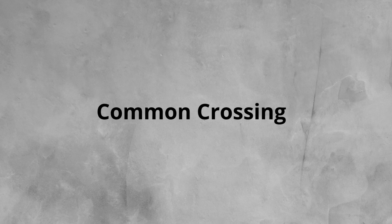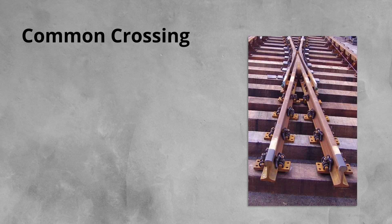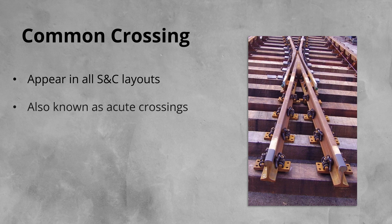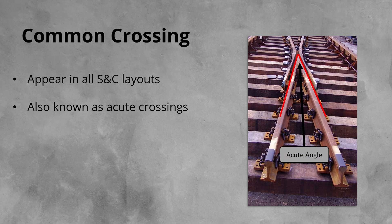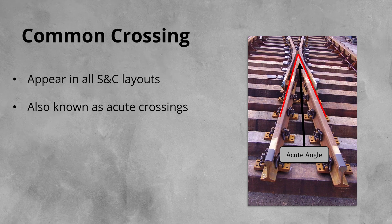Let's take a look at the first crossing type, common crossings. Common crossings get their name from the fact that they appear in all types of S and C layouts. They are also known as acute crossings. This is because if we were to draw two lines, one on each rail a train could be taking, like the ones here in red, they form an acute angle.